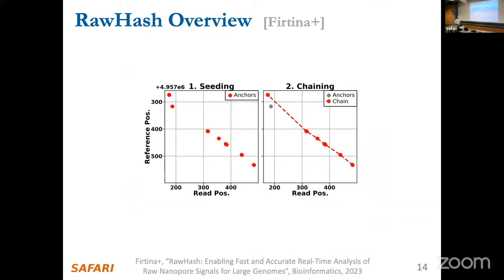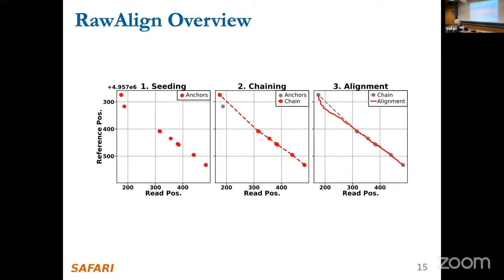In RawHash we have two key steps: seeding, which finds individual small exact matches between the reference (y-axis) and the read (x-axis) represented as points; and then chaining, which finds a set of nicely co-linear anchors using a dynamic programming algorithm. It's a coarse-grained algorithm — it just connects the points without evaluating what's in between. What RawAlign adds is an alignment step afterwards.